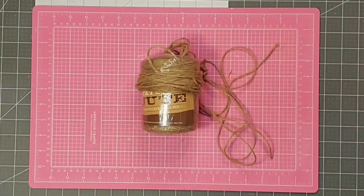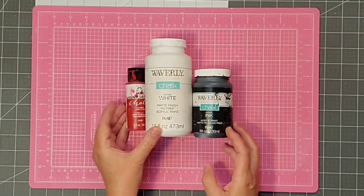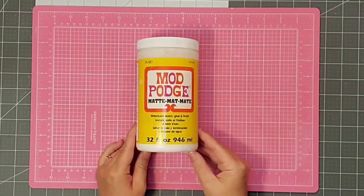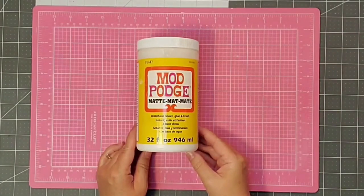Some jute twine. Some chalk paint in white, black, and red. And finally, some Mod Podge, some Fabri-Tac, and hot glue.